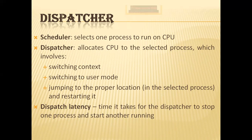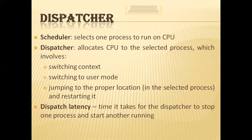Context switching, as the name indicates, implies switching the CPU from one process to another. This involves saving the state of the old process and loading the saved state of the new process. Switching to user mode: a user process must run in user mode, so the mode must be changed from monitor mode to user mode. Restarting execution means jumping to the instruction that was supposed to be executed when the process was last interrupted, or to the first instruction if it is being executed for the first time after creation.